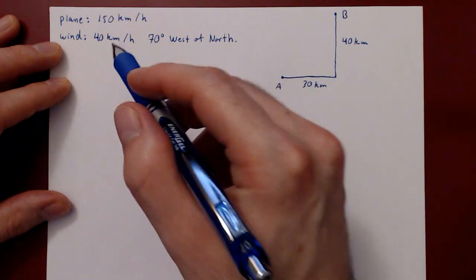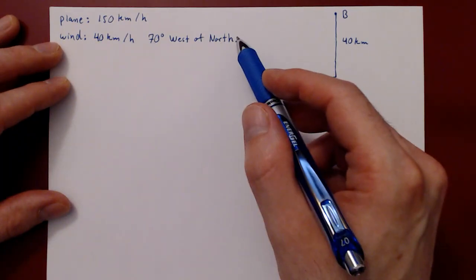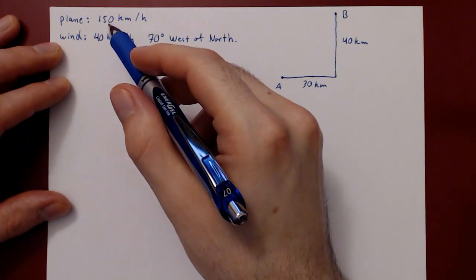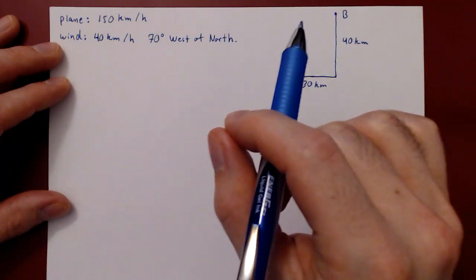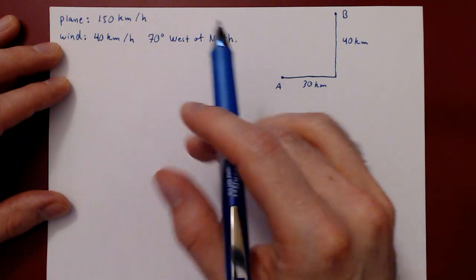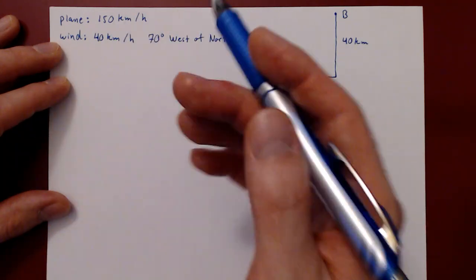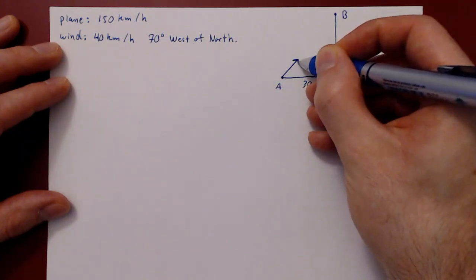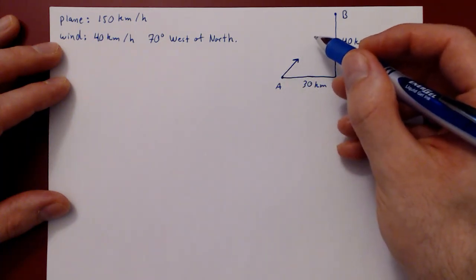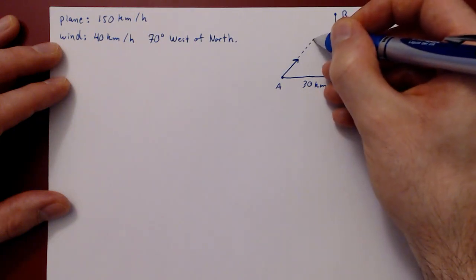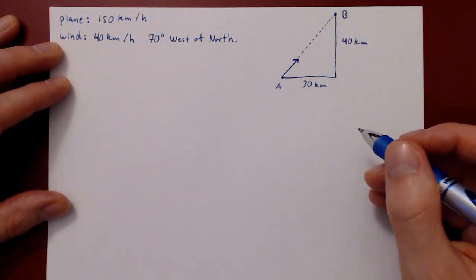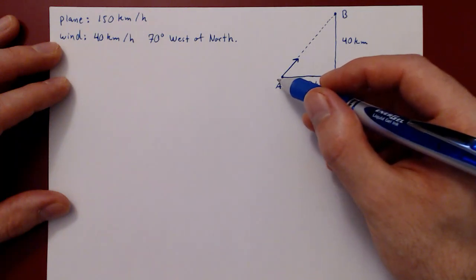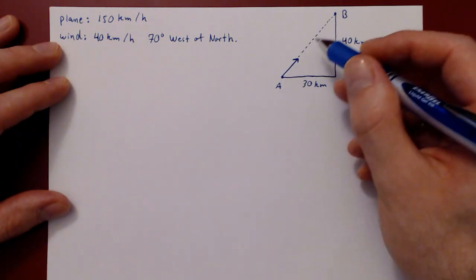We have the speed and direction of the wind, giving us a complete velocity vector for the wind. We only have the speed of the plane. The question is: in which direction should we aim the plane so that the net result of the plane's velocity vector and the wind's velocity vector traces a path pointing perfectly from A to B, flying in a straight line?